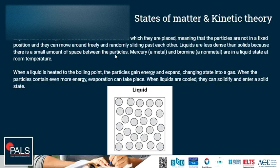Liquids take the shape of the bottom of their container in which they are placed, meaning the particles are not in a fixed position and they can move around freely and randomly, sliding past each other. Liquids are less dense than solids because there is a small amount of space between the particles. Mercury, a metal, and bromine, a non-metal, are in a liquid state at room temperature — the only two elements on the periodic table that are liquid at room temperature. When a liquid is heated to the boiling point, the particles gain energy and expand, changing state into gas. When liquids are cooled, they can solidify and enter the solid state — another word for solidifying is freezing.